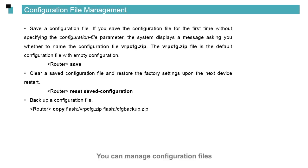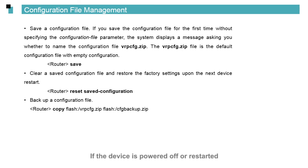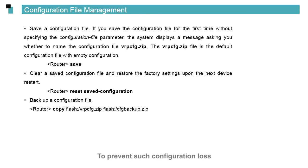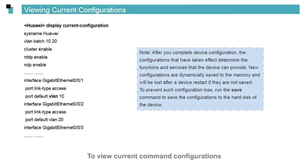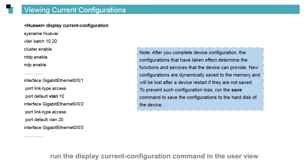You can manage configuration files. Command configurations are dynamically saved in the memory. If the device is powered off or restarted, new configurations are cleared if they are not saved. To prevent such configuration loss, run the save command in the user view to save configurations. To view current command configurations, run the display current-configuration command in the user view.